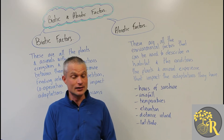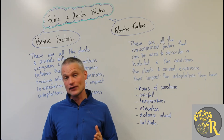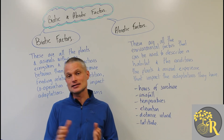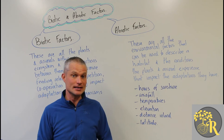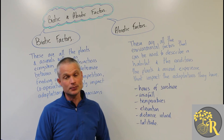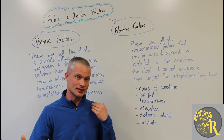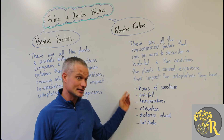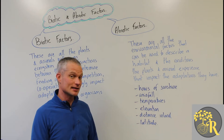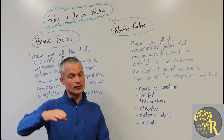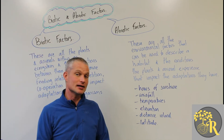Latitude also affects the temperature a place experiences. When close to the equator, temperatures are pretty consistent throughout the year, normally sitting around 30 degrees Celsius. But further away from the equator, the differences in temperature become more extreme, and as you move towards the poles they get very extreme indeed — particularly cold in winter, with big changes from winter to summer. Elevation is another important factor and works in a similar way to latitude.